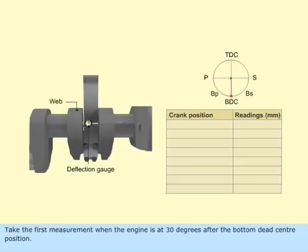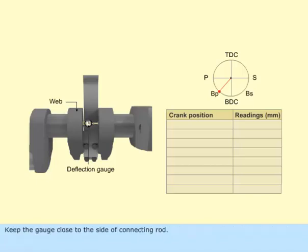Take the first measurement when the engine is at 30 degrees after the bottom dead center position. Keep the gauge close to the side of connecting rod. Set the gauge to zero at this position.